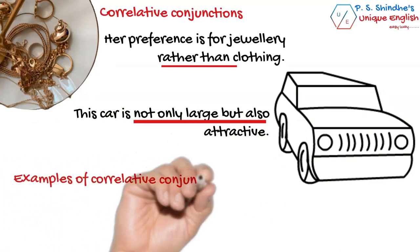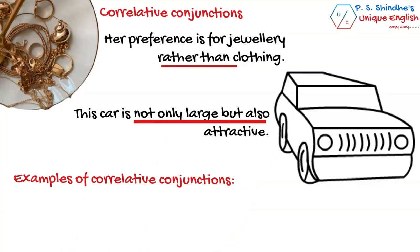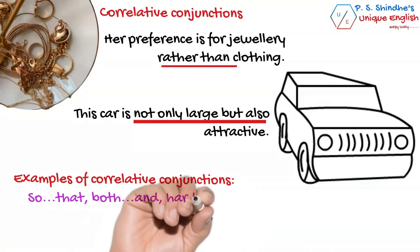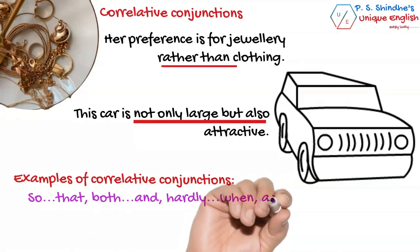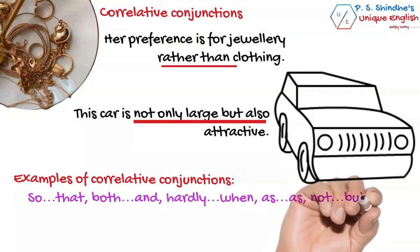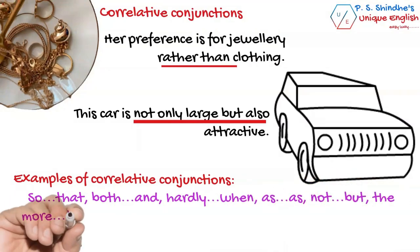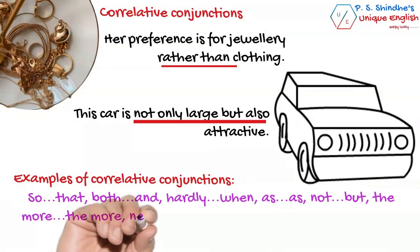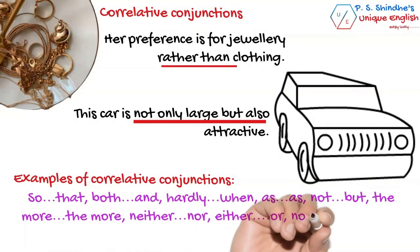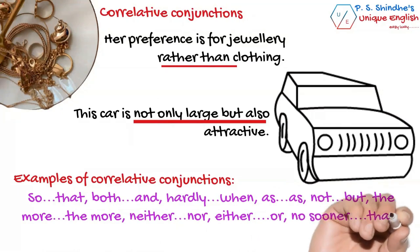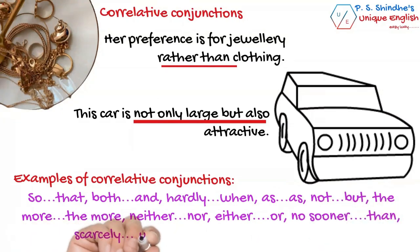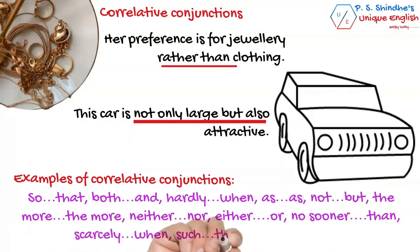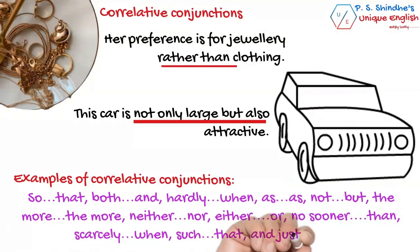The most commonly used correlative conjunctions are: so that, both...and, hardly...when, as...as, not...but, the more...the more, neither...nor, either...or, no sooner...than, scarcely...when, such...that, just as...so, etc.